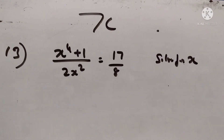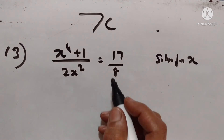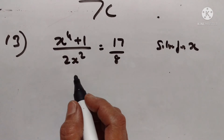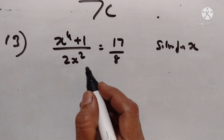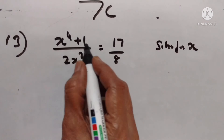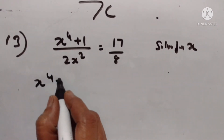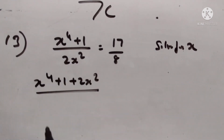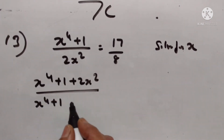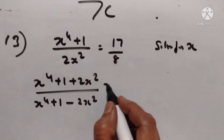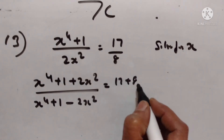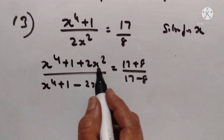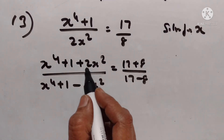Hello students, welcome to my channel Easy Easy Math. Let's go to exercise 7C, 13th problem — we have to solve for x. Let's make use of componendo dividendo: this plus this upon this minus this. So x to the power 4 plus 1 plus 2x squared upon x to the power 4 plus 1 minus 2x squared is equal to 17 plus 8 upon 17 minus 8.